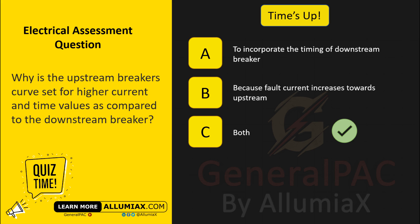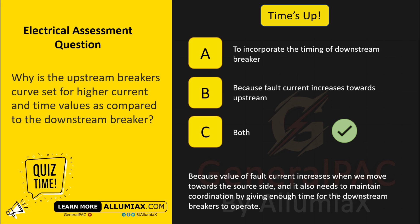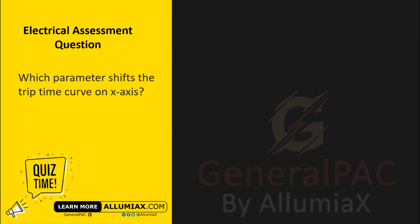The answer is C — both. Because the value of fault current increases when we move towards the source side, and it also needs to maintain coordination by giving enough time for the downstream breaker to operate. Which parameter shifts the trip time curve on the X axis?